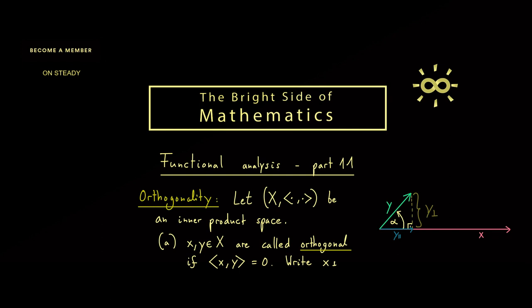However, one also uses this symbol for subsets of the vector space X. In this case one writes U perpendicular to V if x is perpendicular to y for all x in U and y in V. Exactly in this sense the sets are orthogonal.